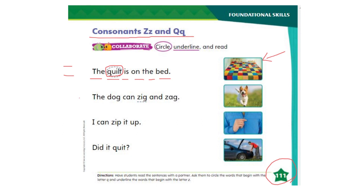Now let's read the second one: the dog can zig and zag. The word zig begins with Z, so you underline the word zig. Also the word zag. If we look at the picture we see that the dog can zig and zag. Now you need to continue the third and the fourth sentences by yourself. When you finish your work, take a picture of it and send it to your teacher. Have a good day.